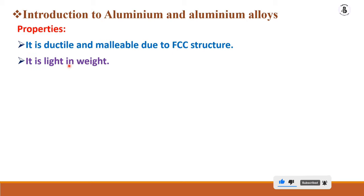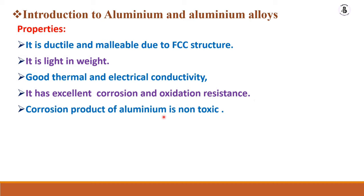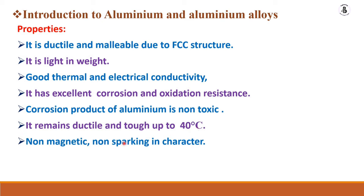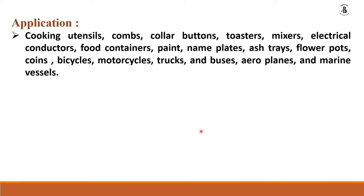Aluminium alloys are lighter in weight, making them suitable for high-strength, low-density applications. They have good thermal and electrical conductivity, excellent corrosion and oxidation resistance — aluminium alloy does not corrode under most conditions — and the corrosion products are non-toxic. The material remains ductile and tough down to negative 40 degrees centigrade, and it is non-magnetic and non-sparking. It also has an excellent ability to form alloys with other elements.